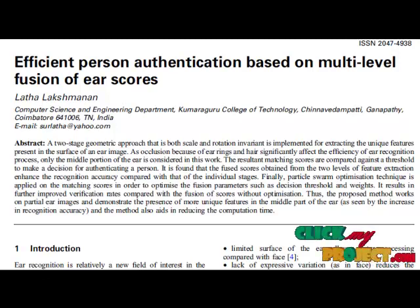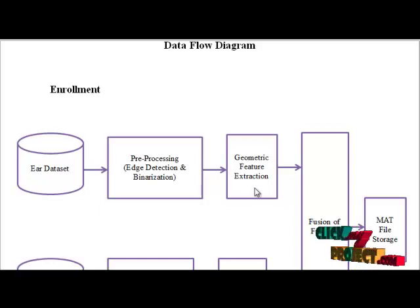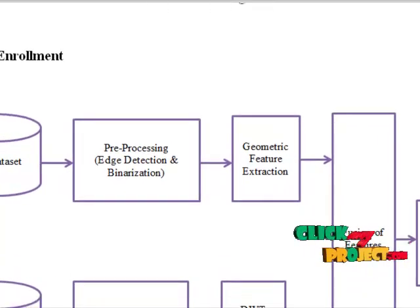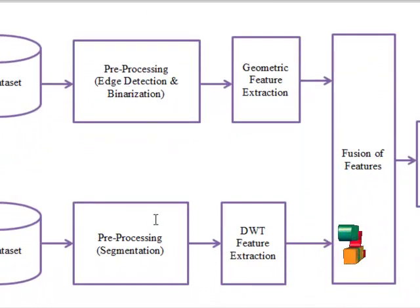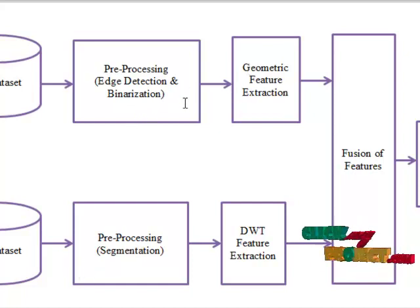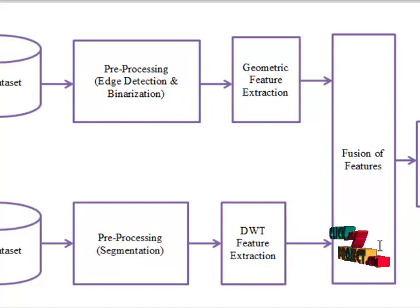Now let's discuss the data flow diagram. As it is an identification project, it has two steps: enrollment and verification. In the enrollment step, we collect ear images along with iris images and apply pre-processing — noise reduction and binarization for ear, and segmentation for iris. We then extract geometric features from the ear database and DWT features from the iris database, concatenate the features using fusion, and store them in a map file.